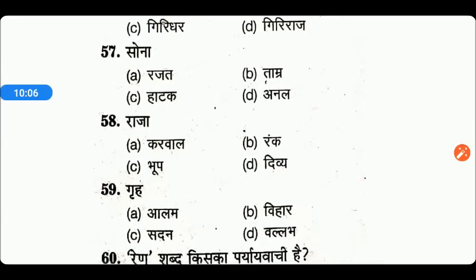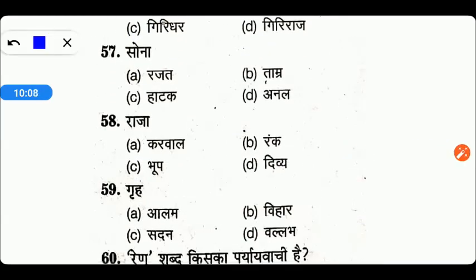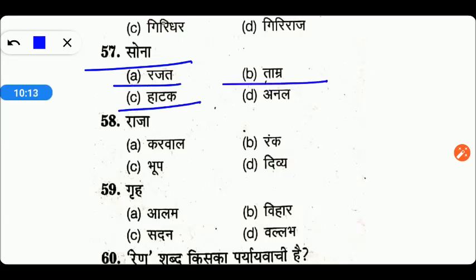Next आते हैं: सोना। सोना का पर्यायवाची देखते हैं — रजत, ताम्र, हाटक, या अनल। तो friends, यहाँ पर जो इसका right answer है वो है option number C — हाटक।